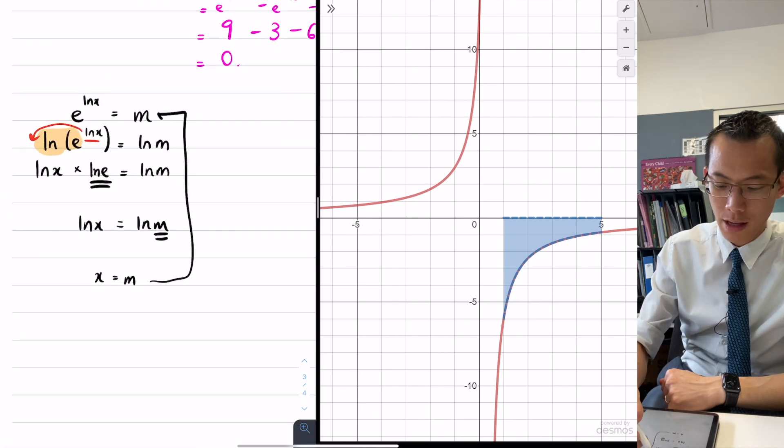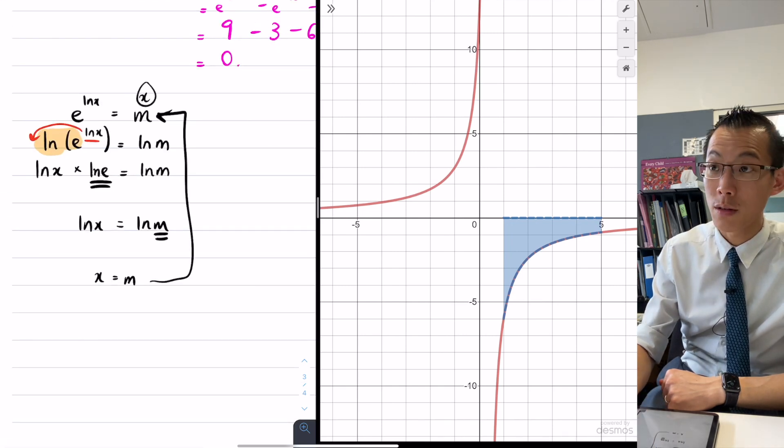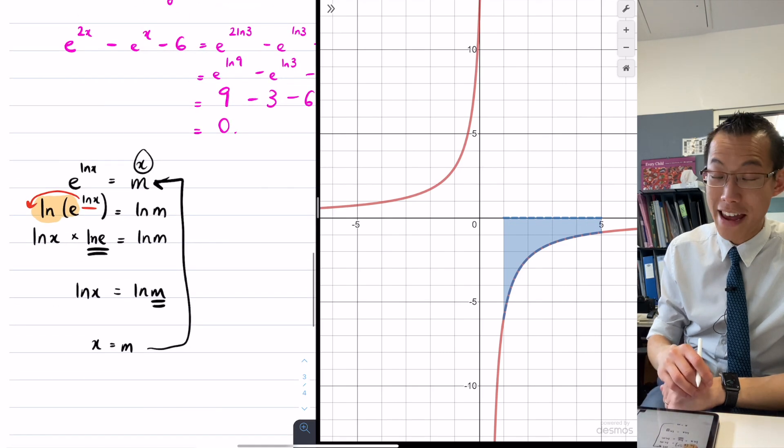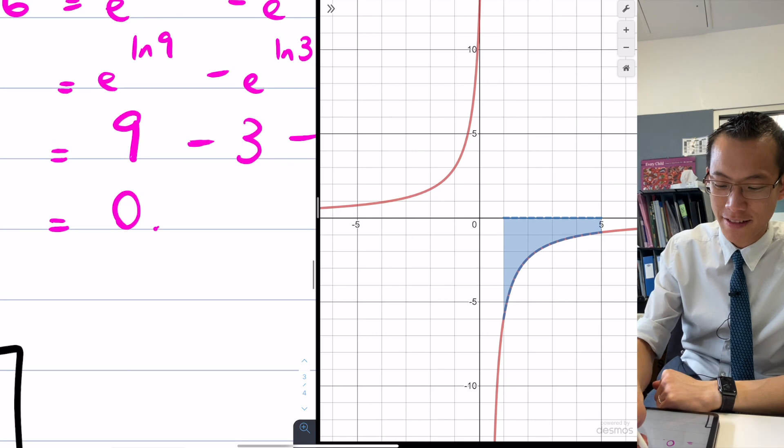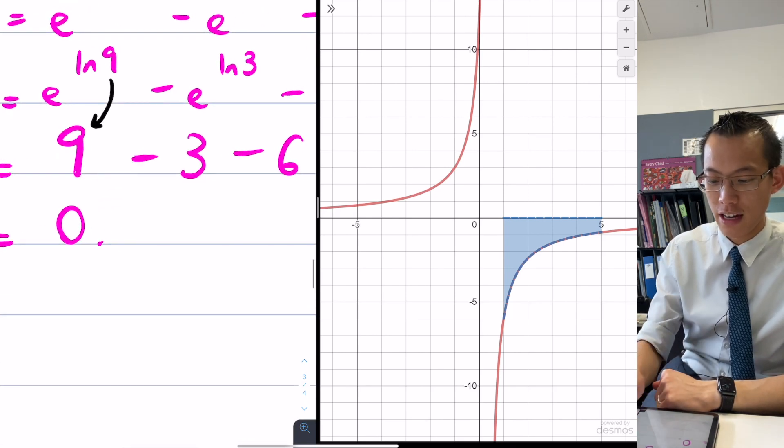E just breaks me. E is, you know. Now, for that reason, you've got e to the log 9, so it's just 9. You're e to the log 3, so it's just 3. And then off you go.